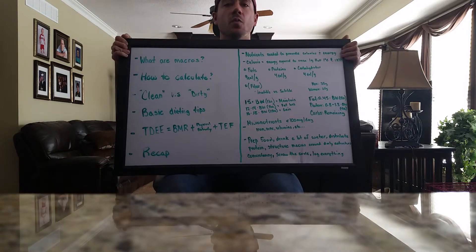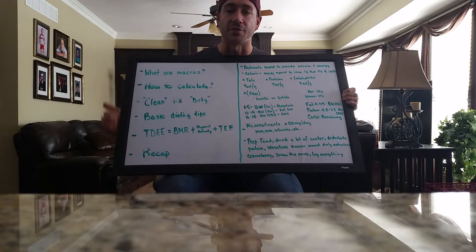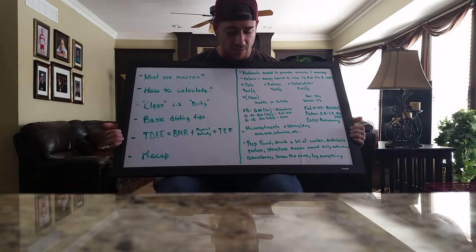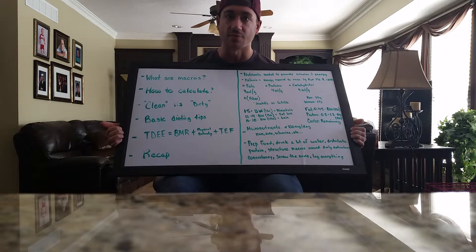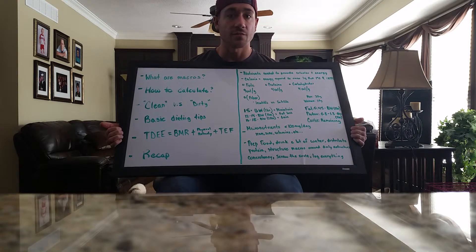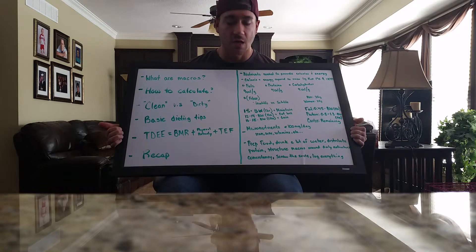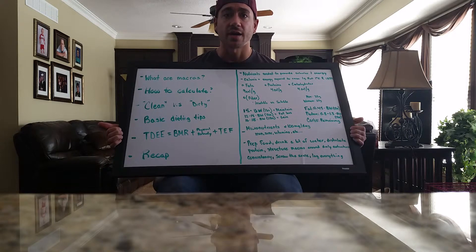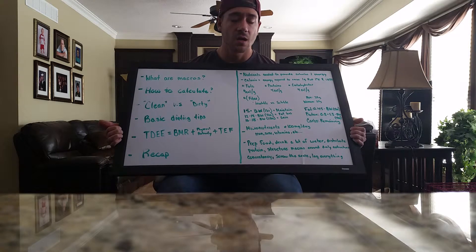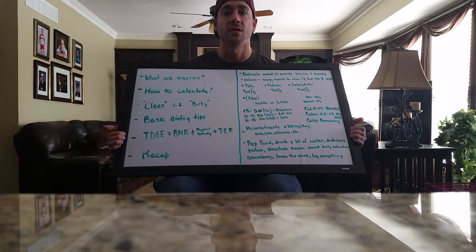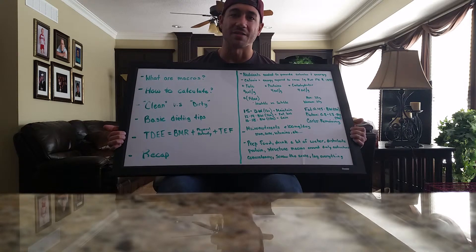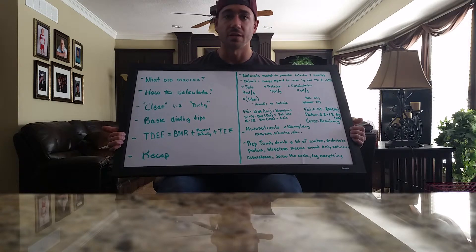Say you don't want to maintain — say you're wanting to start prepping for a show, or you just want to get a beach body and lose 5 or 10 pounds. Well, easy enough — you just reduce that. Take your body weight and multiply it by anywhere from 12 to 14, depending on whether you have a higher or slower metabolism. These values are going to give you rough estimates — it is general, but it's a good starting point.